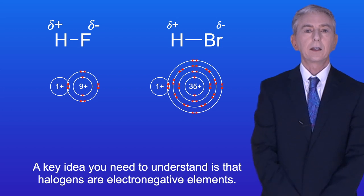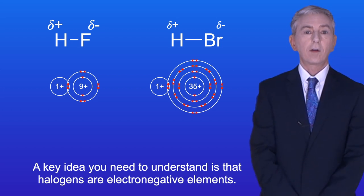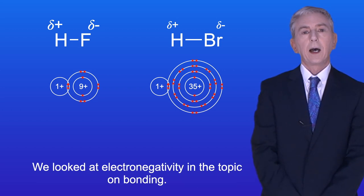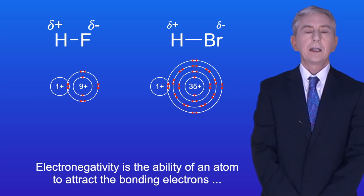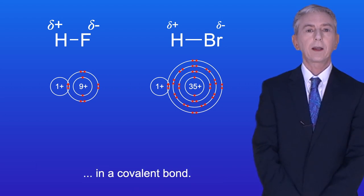Now, a key idea you need to understand is that halogens are electronegative elements, and we looked at electronegativity in the topic on bonding. Electronegativity is the ability of an atom to attract the bonding electrons in a covalent bond.